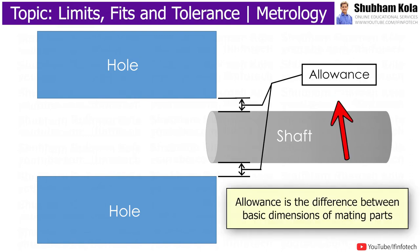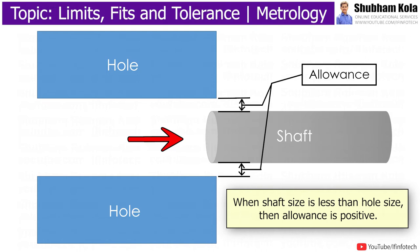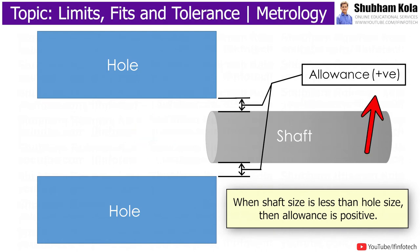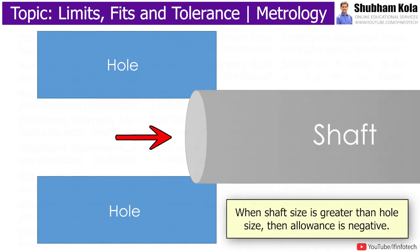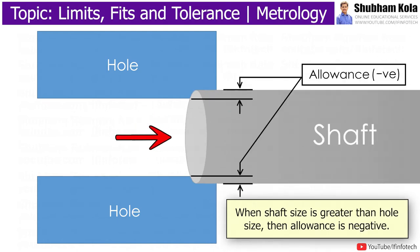Allowance is the difference between the basic dimension of mating parts. When shaft size is less than hole size, then allowance is positive, and when shaft size is greater than hole size, then allowance is negative.